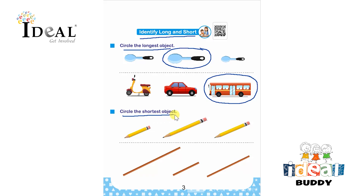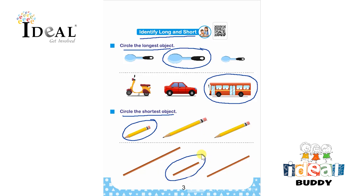After that, here they have to circle the shortest object. There are three pencils and the shortest one is this one. There are also three sticks given, and the shortest stick is this one. The child has to identify the longest object.